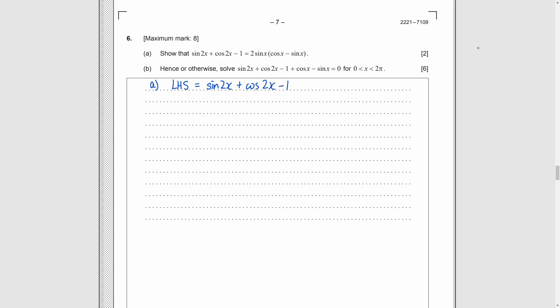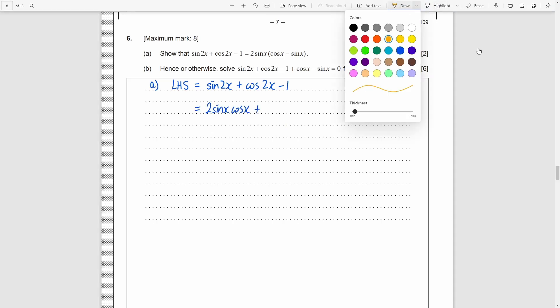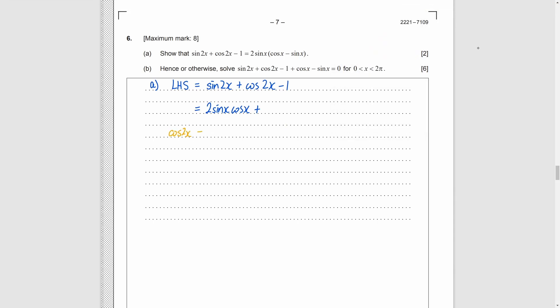We should use double angle formula to break the terms in the left-hand side. So, for sine 2x, we can change it to 2 sine x cosine x. But for cosine 2x, there are 3 ways to change it. So, which one should we use?